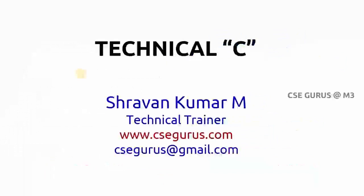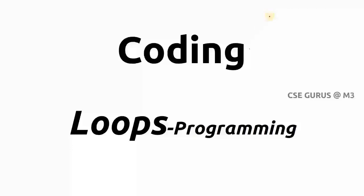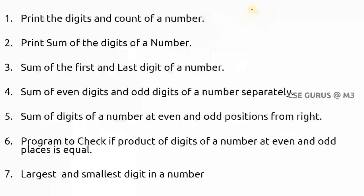Welcome to the video lectures on Technical C by Shravan Kumar Mantri. The first question is printing the digits and count of a number. Let's take an example where n equals 523. The digits in this number are 5, 2, and 3. We want to print those digits — let's see the logic.